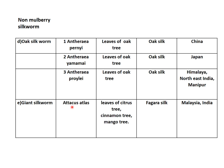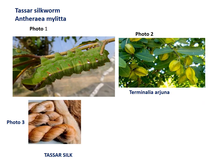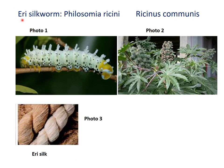Aina silkworm: the scientific name is Attacus atlas. It feeds on the leaves of citrus tree, cinnamon tree, and mango tree. The silk produced is called Fagara silk. Aina silkworms are generally found distributed in Malaysia and in India. This slide depicts the photograph of Tasar silkworm Antheraea mylitta, food plant Terminalia arjuna, and Tasar silk. The next slide shows Eri silkworm Philosamia ricini, food plant Ricinus communis, and Eri silk.